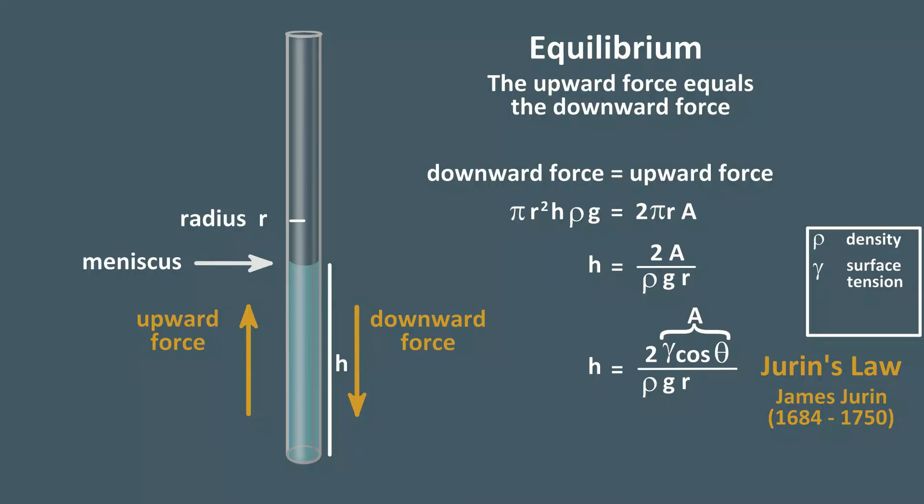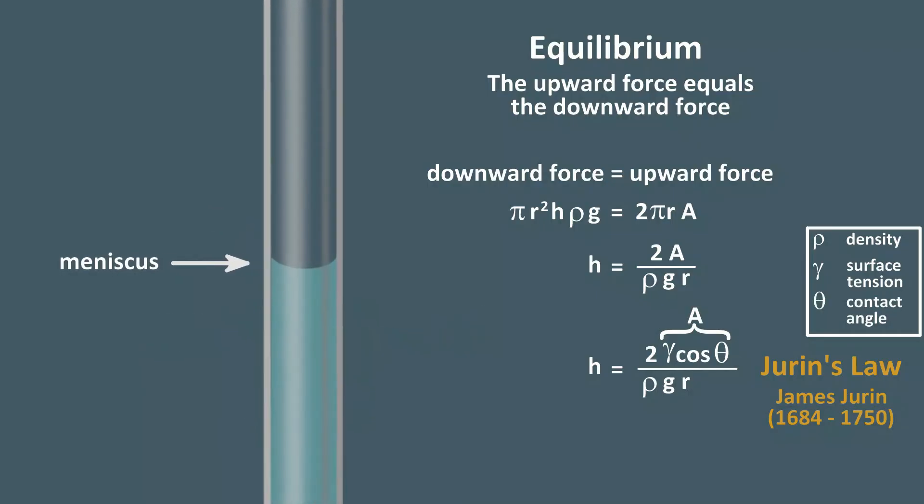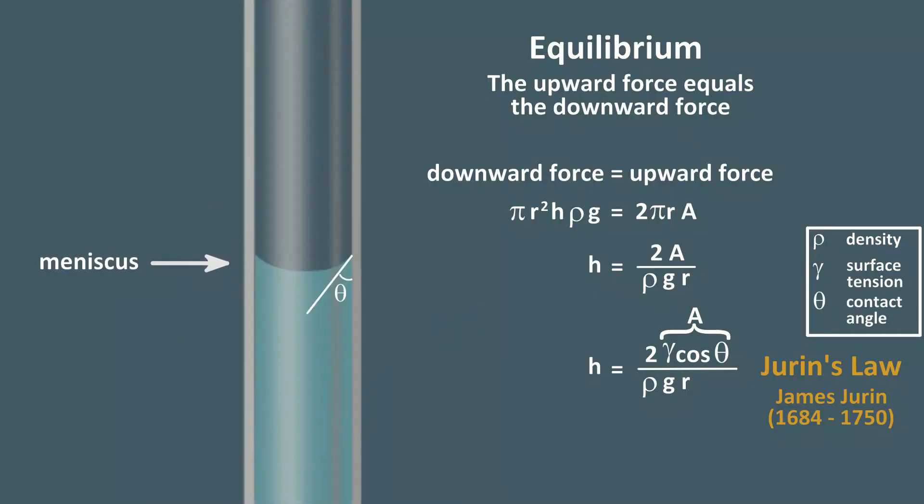The other factor is cosine theta. Theta is the contact angle that the meniscus forms along the side of the tube. The contact angle depends on the liquid in the tube material, for example, water and glass.